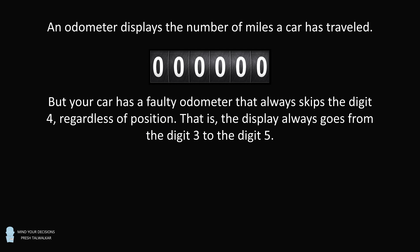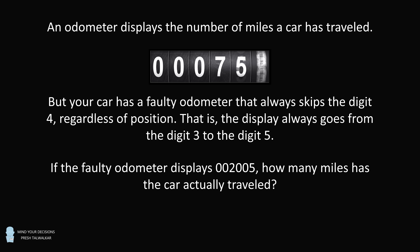You have a car with a faulty odometer that always skips the digit 4 regardless of position. That is, the display always goes from the digit 3 to the digit 5. So the odometer will go from mile 3 to mile 5, and it will go from mile 39 all the way to displaying mile 50. The question is: if the faulty odometer displays 00005, how many miles has the car actually traveled?